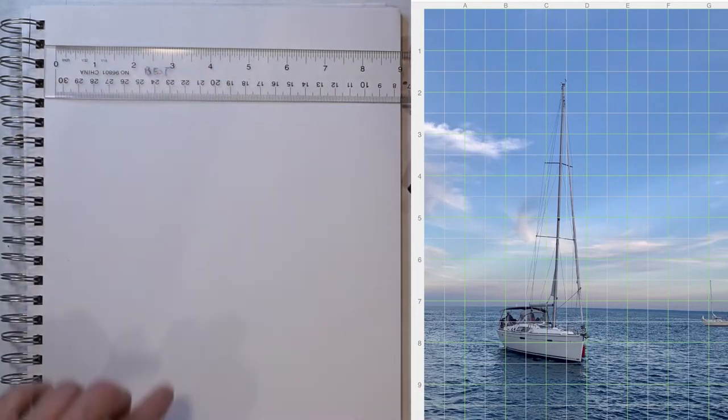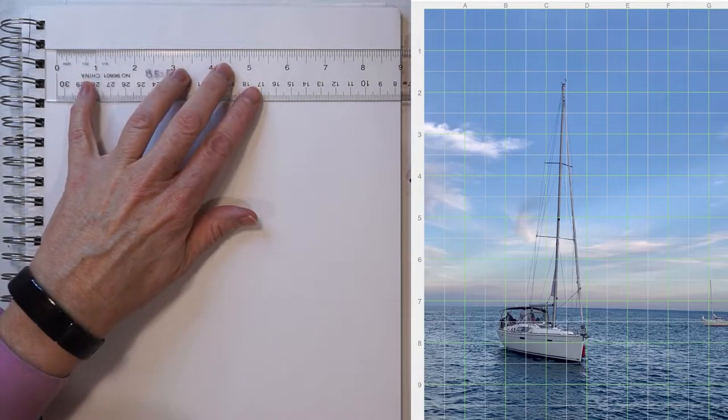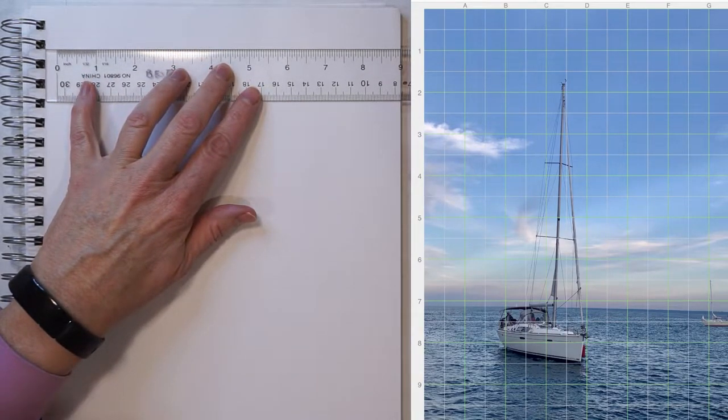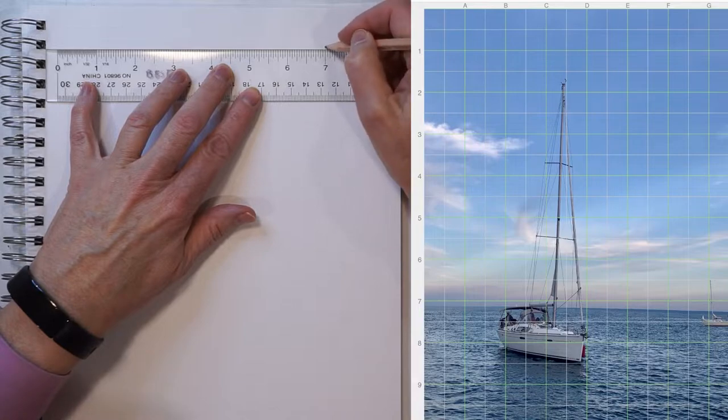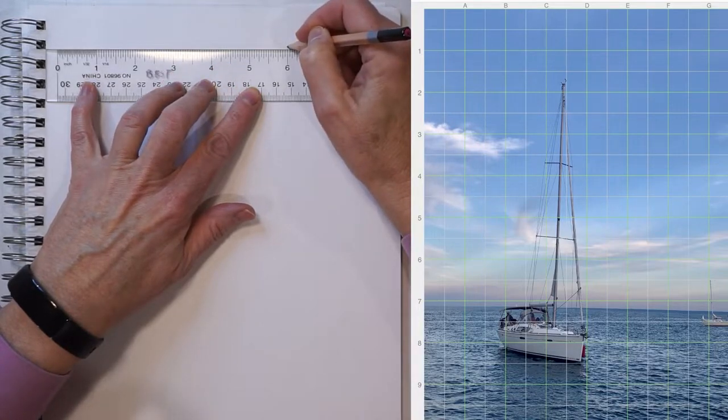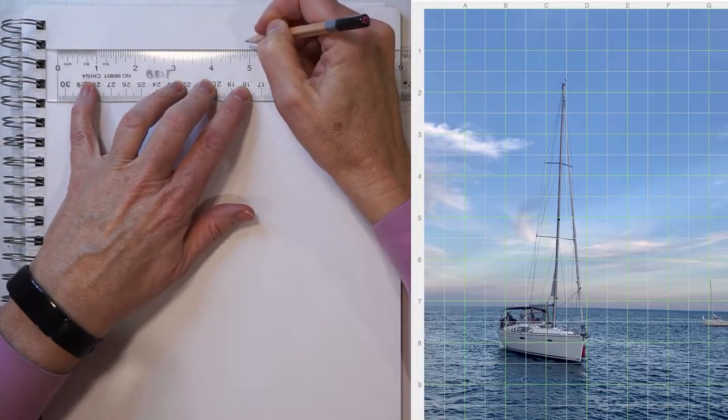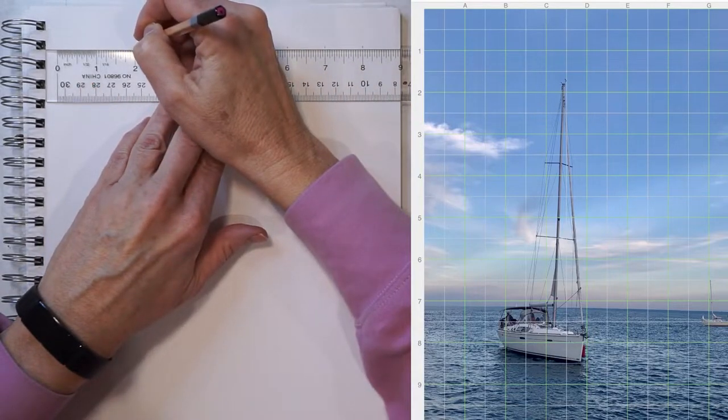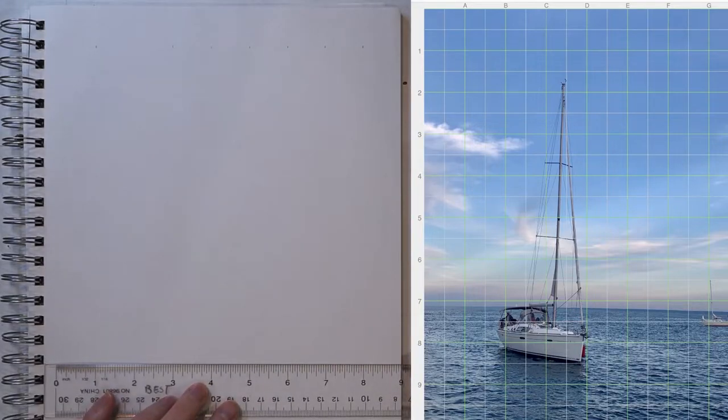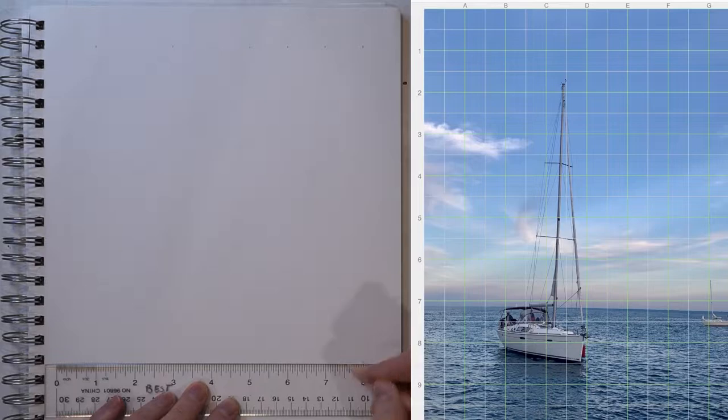I've got a 9x12 sketchbook here and I'm going to mark off every inch at the top here. So I'm going to line the 9 inch off the edge and I'm going to put a mark every inch. Do the same thing down at the bottom, marking off every inch.